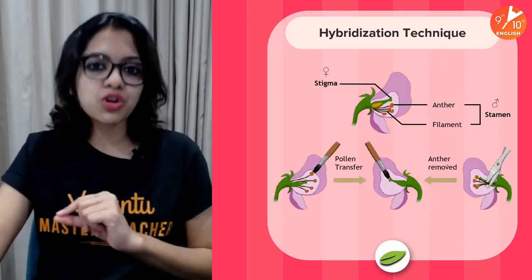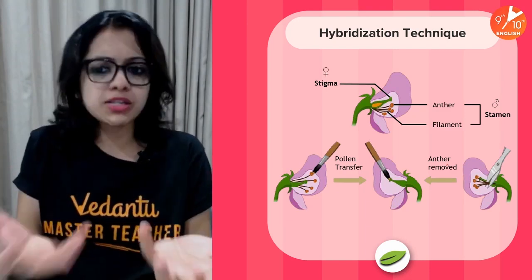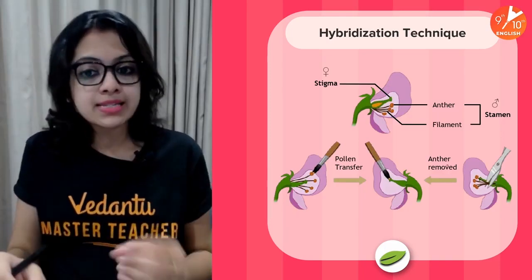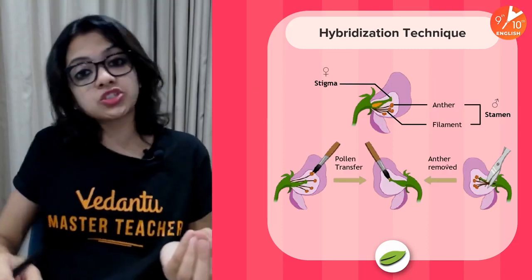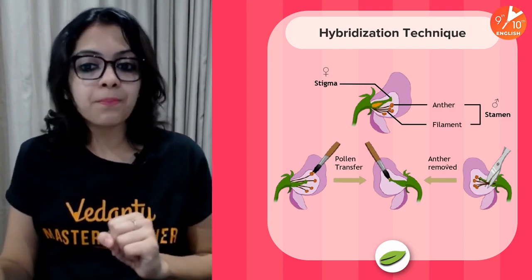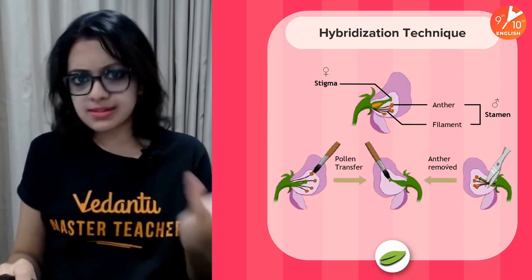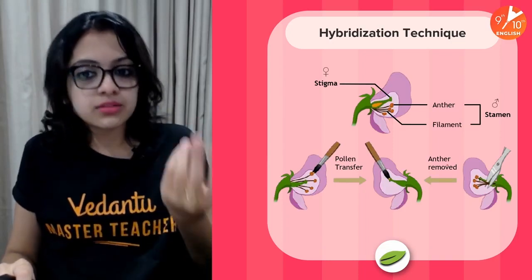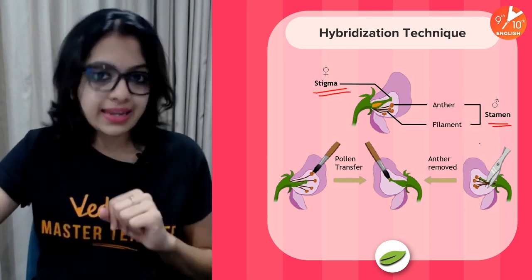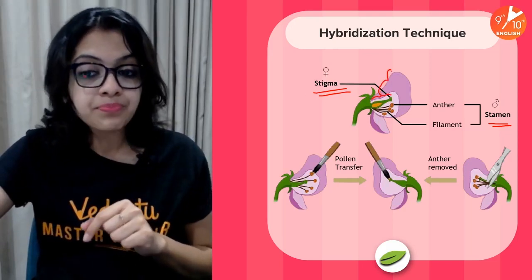The hybridization technique was mainly what Mendel used in order to cross-pollinate pea plants according to his choices. Being a scientist, he had to be able to cross-pollinate the organism he was studying. The pea plant normally undergoes self-pollination but can easily be cross-pollinated, and this is how Mendel carried out cross-pollination using the hybridization technique.